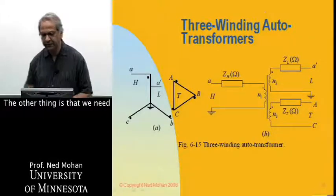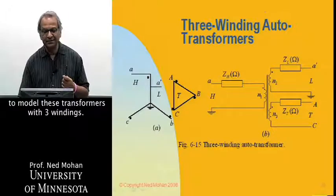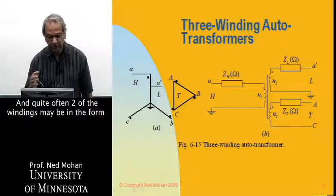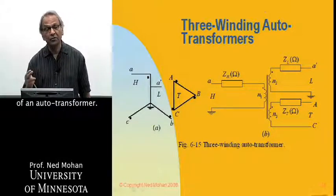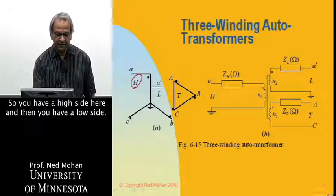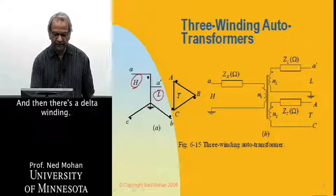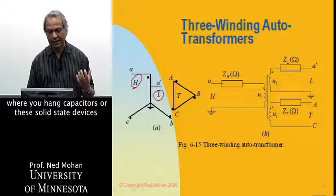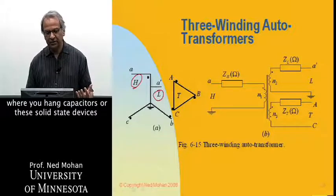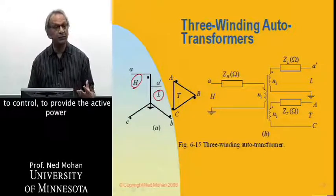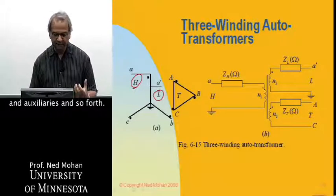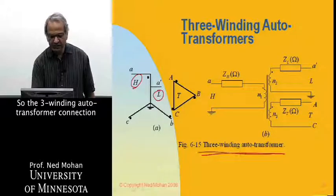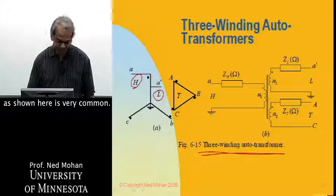The other thing is that we need to model these transformers with three windings. And quite often, two of the windings may be in the form of an autotransformer. So you have a high side here, and then you have a low side, and then there's a delta winding, and this delta winding may be a low voltage winding where you can hang the capacitors or the solid state devices to control, to provide reactive power and auxiliaries and so forth. So this three winding autotransformer connection as shown here is very common.